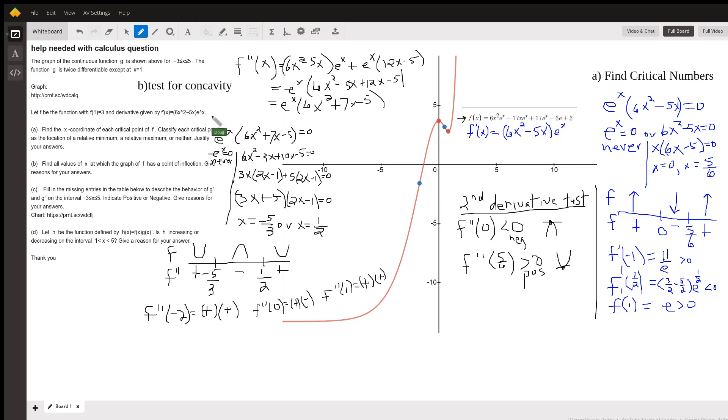Point is, for part A, how do you find the critical numbers and identify them as giving relative maximums or minimums? Well, we need to set the first derivative equal to 0, which was given.